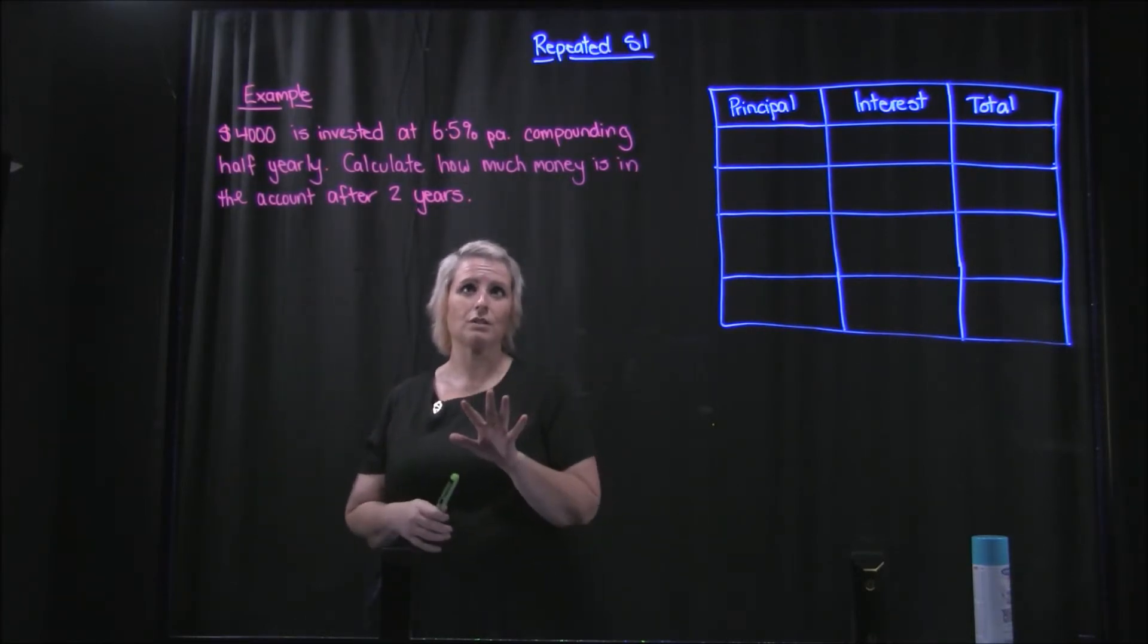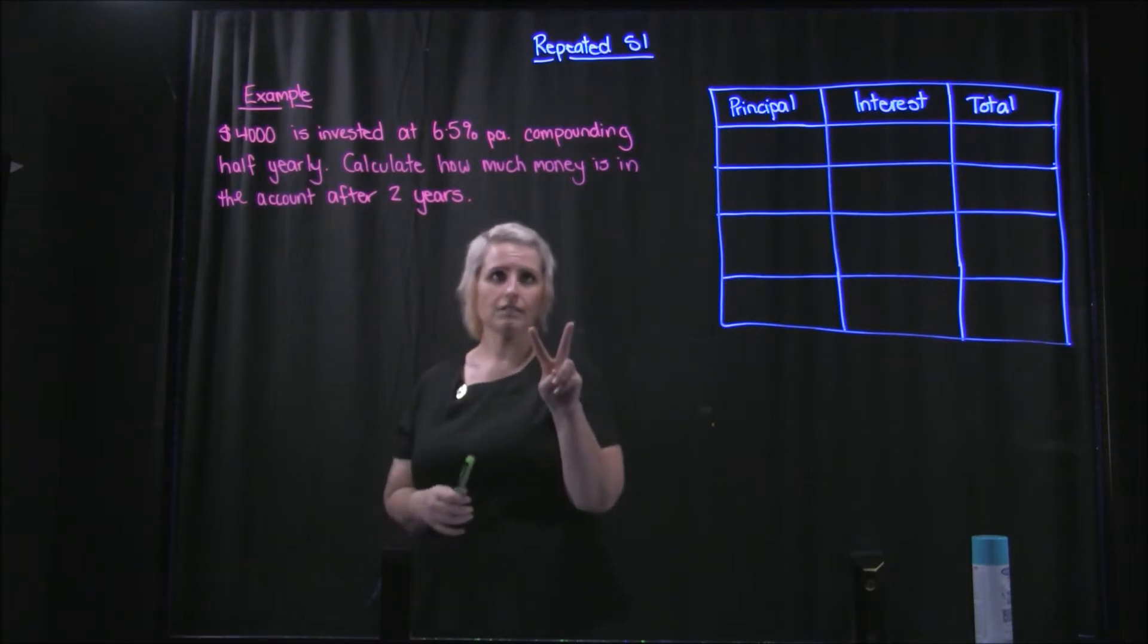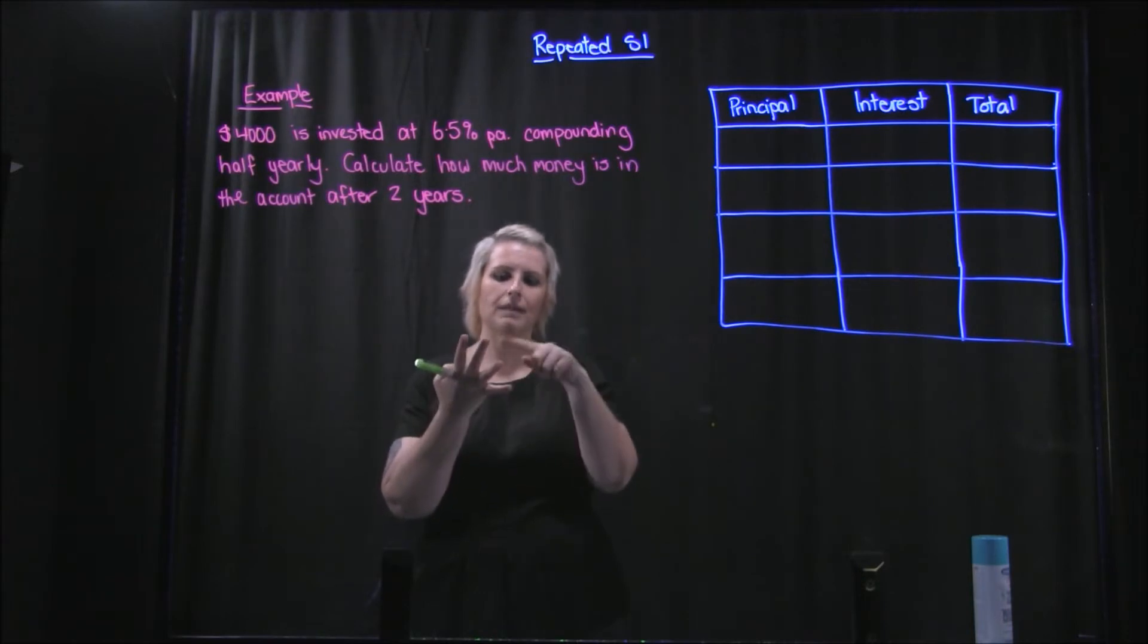The first thing I need to do is go okay, two years, but if it's compounding half yearly that means every six months it's compounding - six months, one year, one and a half years, two years. So that's four.